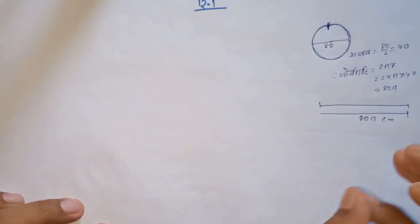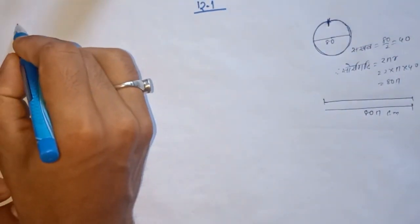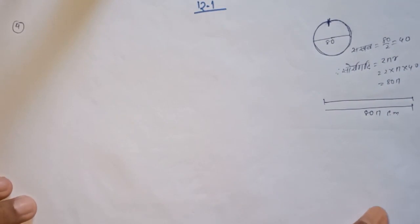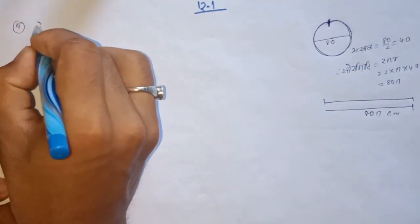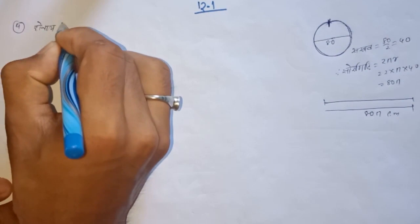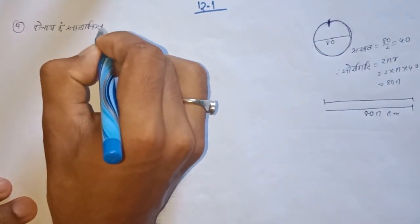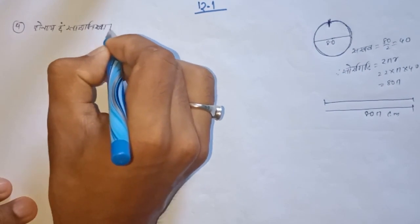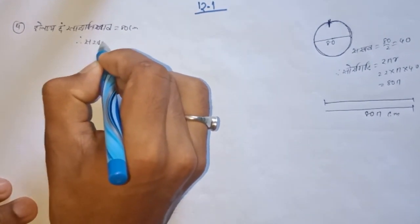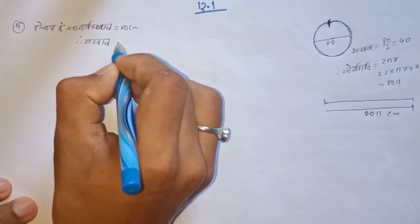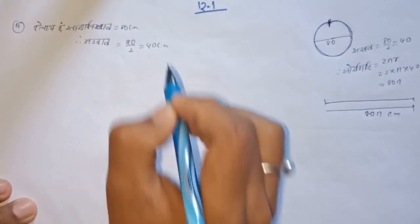The first part is 80 centimeters. Therefore, 80 divided by 2 is equal to 40 cm. So the radius is 40 cm.